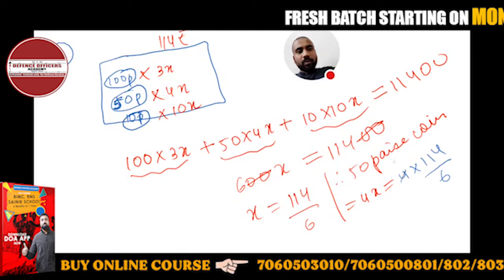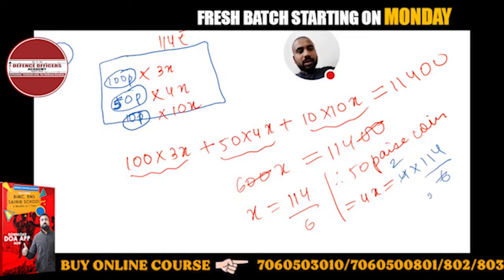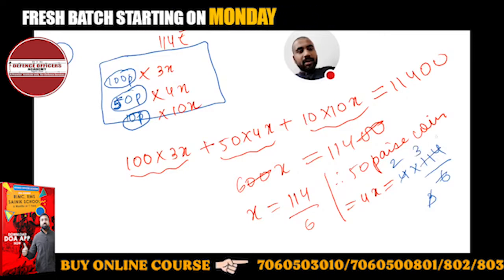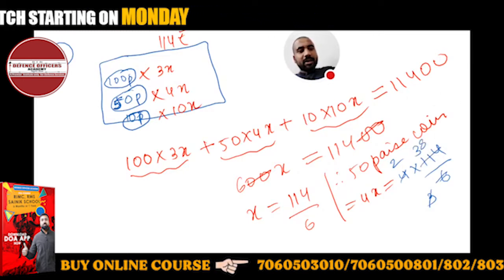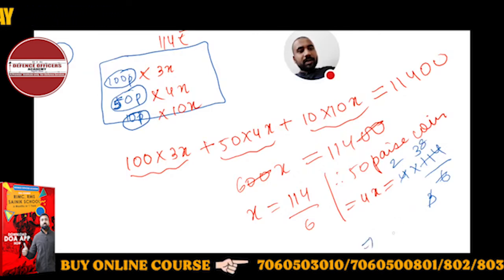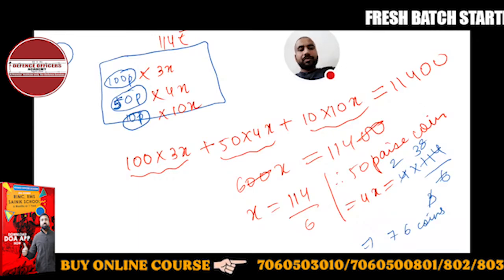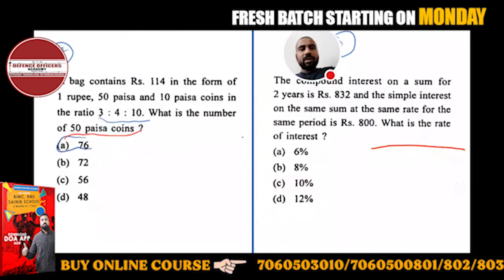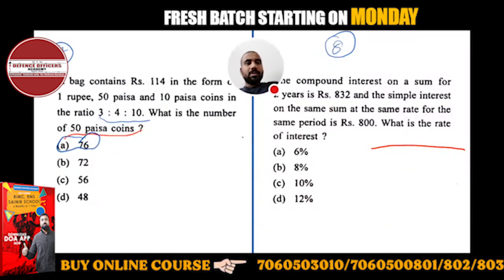2 into 4 is 8, 3 into 6 is 18, 3 into 9 is 27, so 38 into 2 will give you 76 coins. So 76 coins are there. Very easy, so 76 coins will be the right answer.